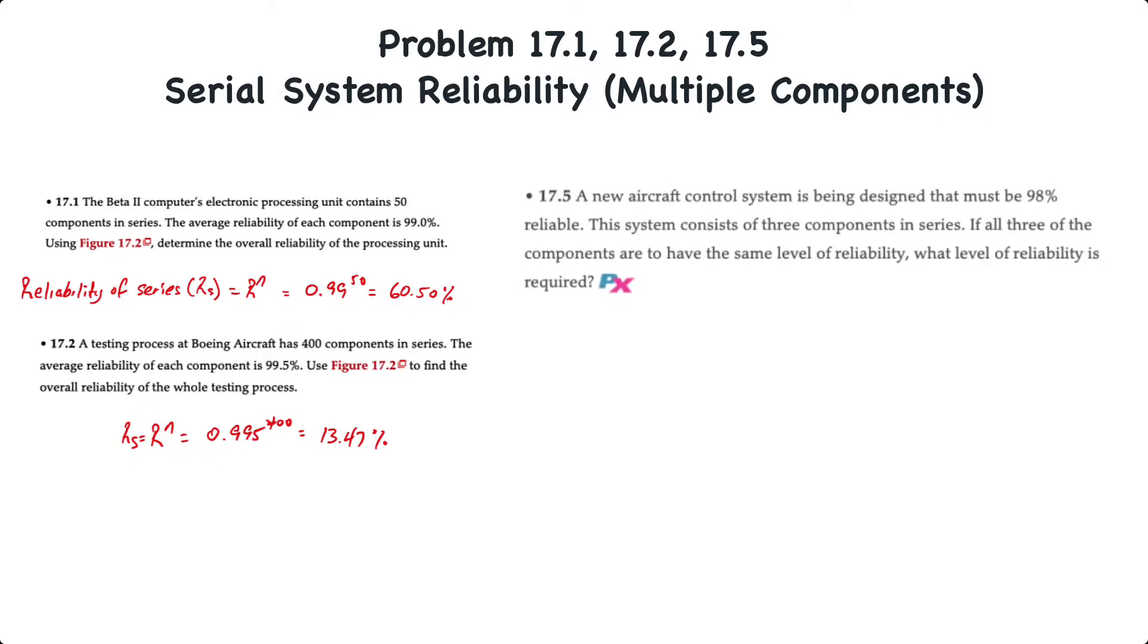For problem 17.5, here a new aircraft control system is being designed that must be 98% reliable. The system consists of three components in series. Now, if all the components are to have the same level of reliability, what level of reliability for each component is required?